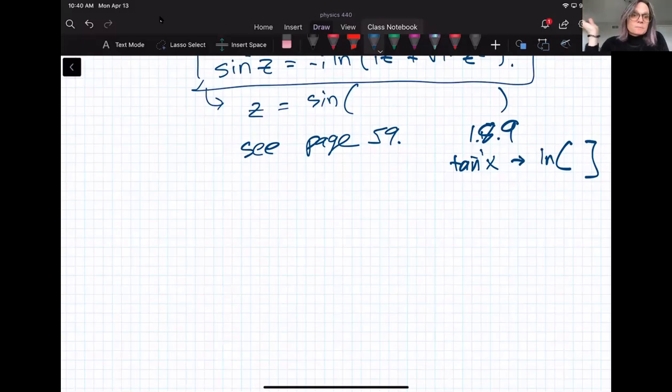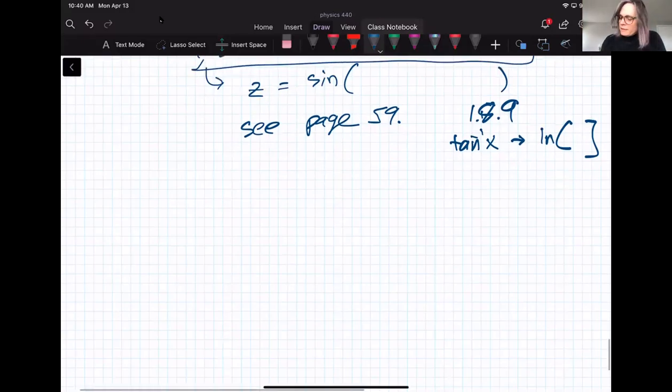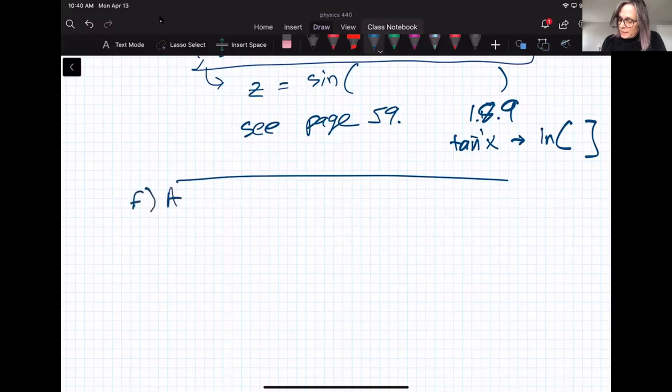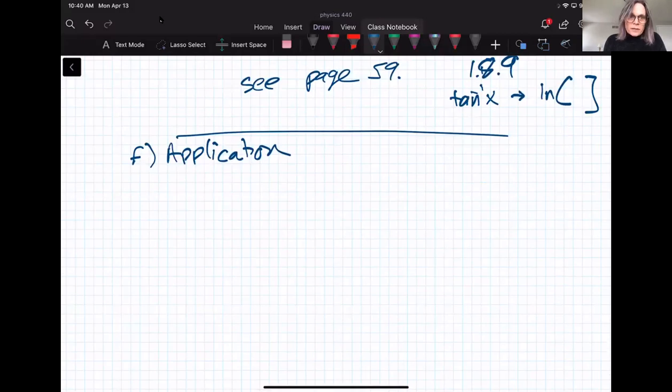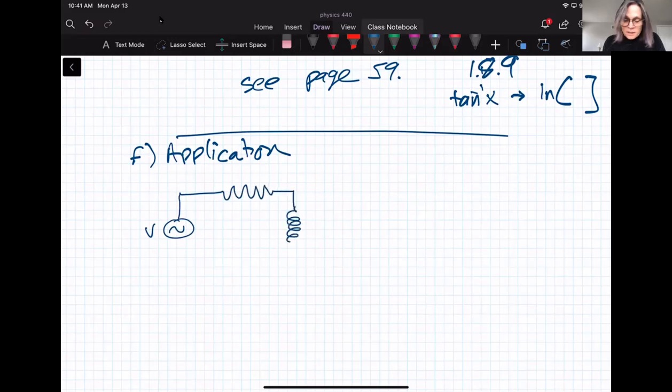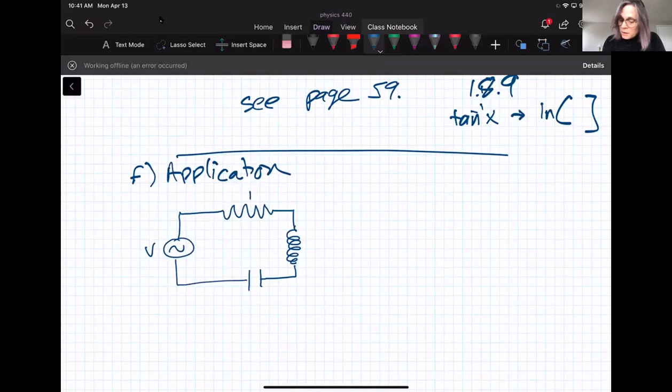All right, take a second here to shake it out, have some coffee, do an application. Any questions? Okay, finally an application, and it's an application I hope I expect you have seen. If not, maybe, maybe not, but hopefully it'll refresh your memory. So let's look at a circuit. Yay! So we'll have a variable power supply here, voltage supply with a resistor. Ignore my horrible circuit drawings, an inductor, and a capacitor. So we have R, L, and C. And across each of these, of course, we have V sub R, V sub L, and V sub C.